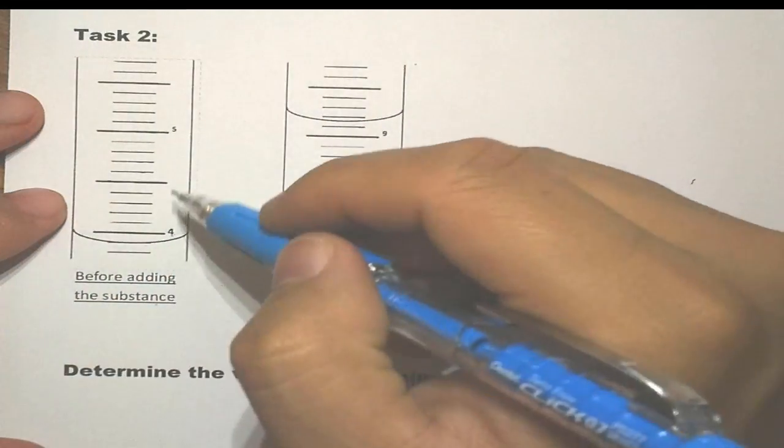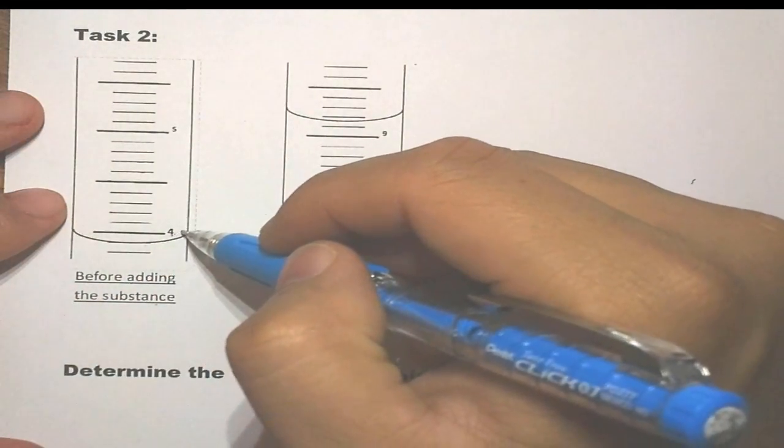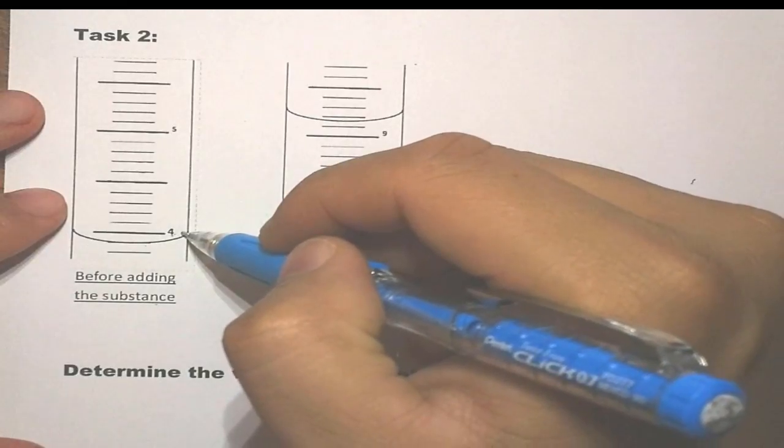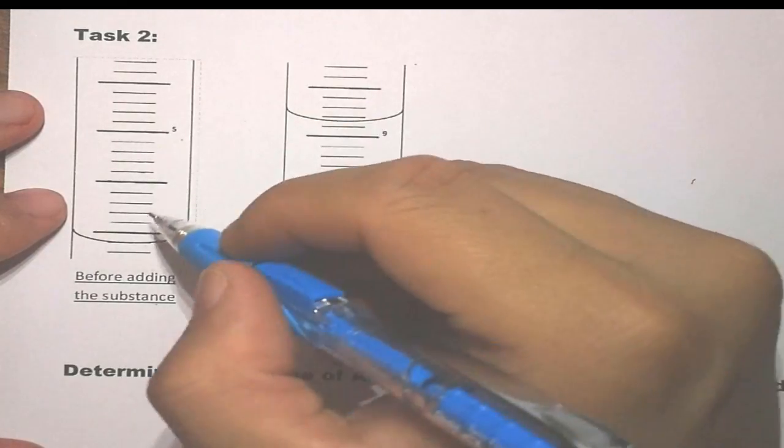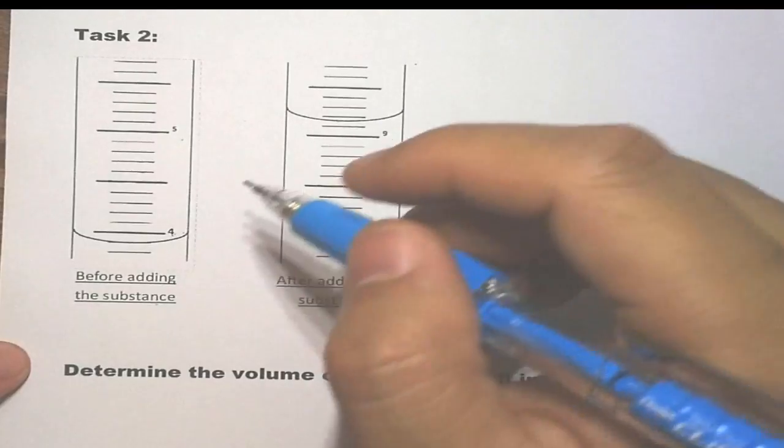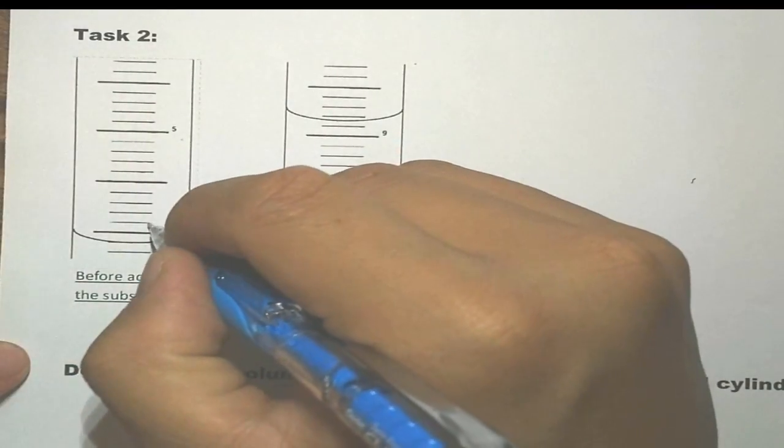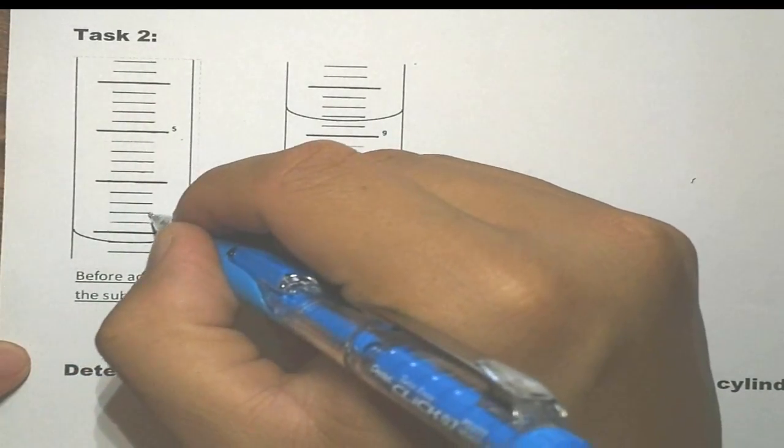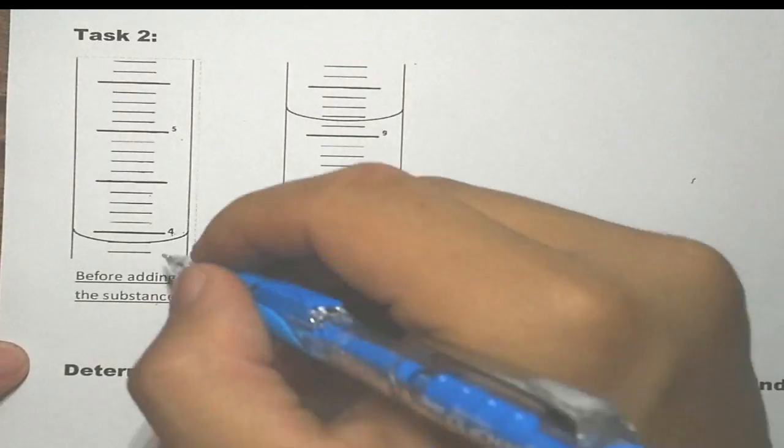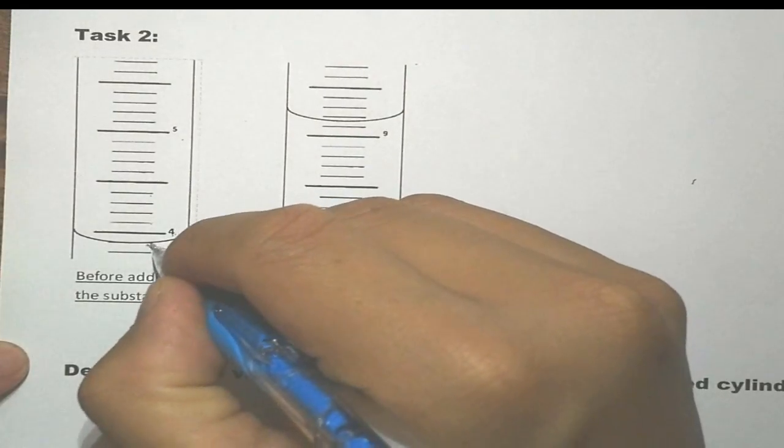So this is our initial. In this case, we have a 10 mL graduated cylinder. So here I have 4, and here I have 5, so each one of them must represent 0.1. So we have 4.1, 4.2, 4.3, and so on. But the line is right there, and this is the meniscus level.